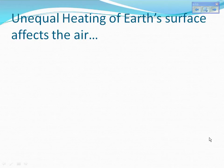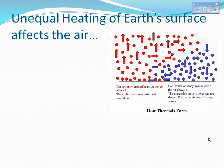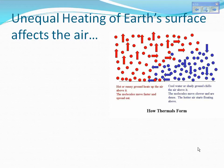Unequal heating of the earth's surface affects the air. The red molecules in the diagram show the ground heating up the air, causing the molecules to move faster and spread apart. The blue dots show that the air is cold and the molecules are coming together, becoming more dense. Therefore, cold air is dense so it sinks, and warm air is less dense so it rises.